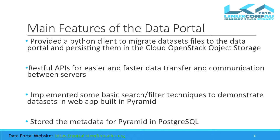The main features of the data portal: it provides a Python client to migrate dataset files to the data portal and persist them in cloud storage. Cloud storage was chosen because it provides a persistent and low-maintenance solution. A RESTful API is used for easier and faster data transfer and communication between servers. We implemented basic and filter techniques to display datasets in the web app built in Pyramid, and we stored the metadata for Pyramid in PostgreSQL.